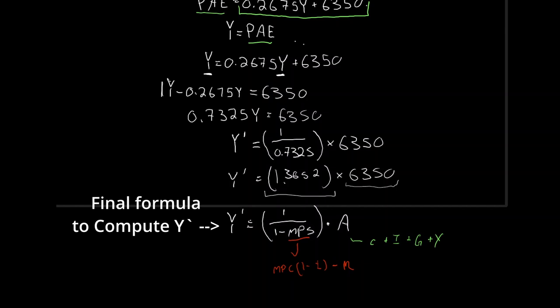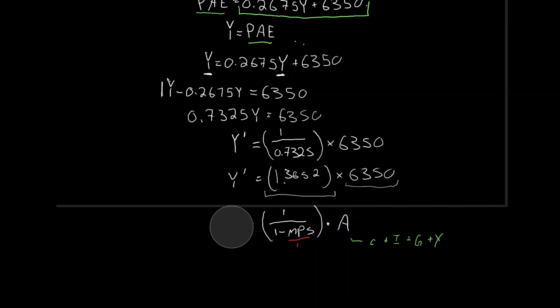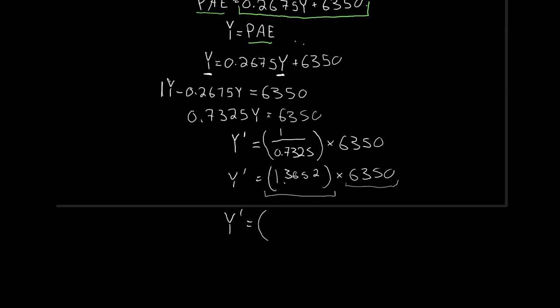Solving that out: our multiplier is 1/0.7325 ≈ 1.3652, times 6,350. Our equilibrium level of national income is Y* = $8,668.94. That's our initial equilibrium. Part one done.